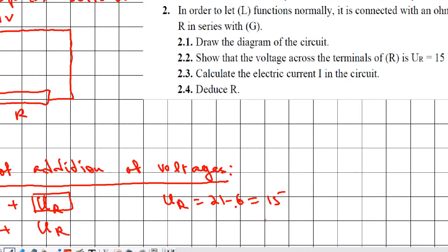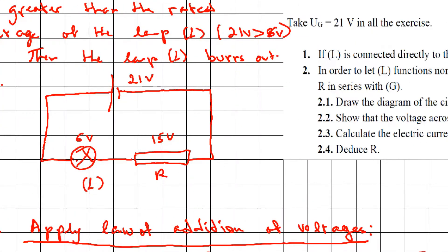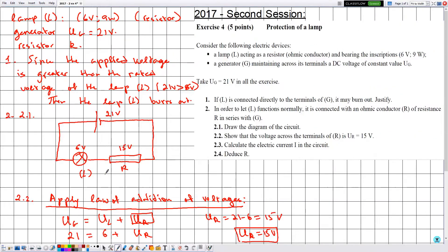Since 21 and 6 are in volts, UR is also in volts, giving UR = 15 volts. This confirms that 15 volts is applied across the resistor, which allows lamp L to function normally.